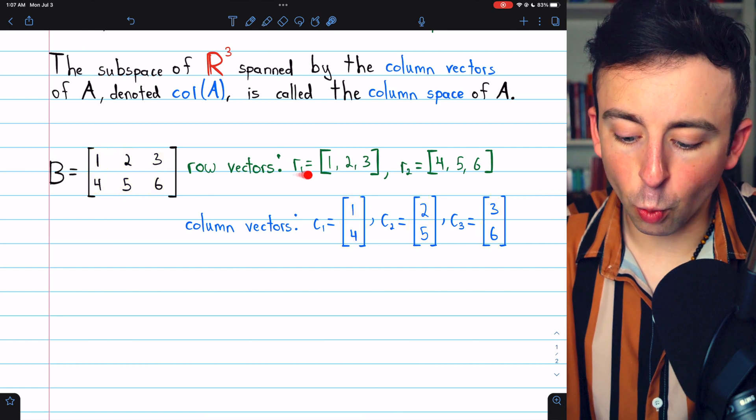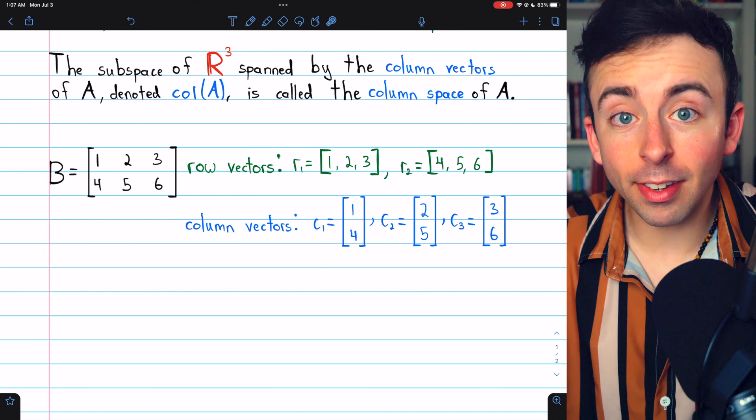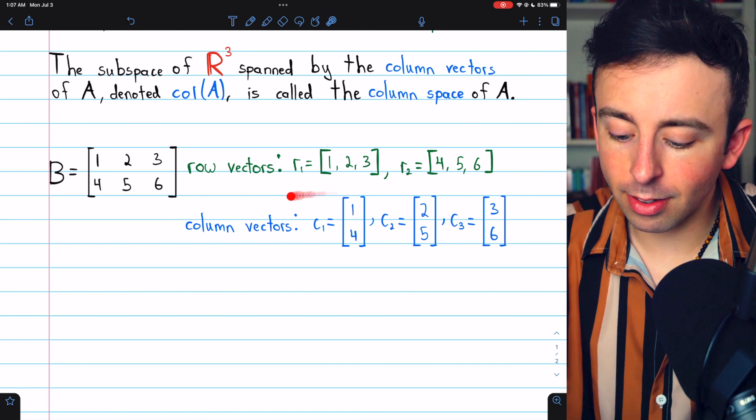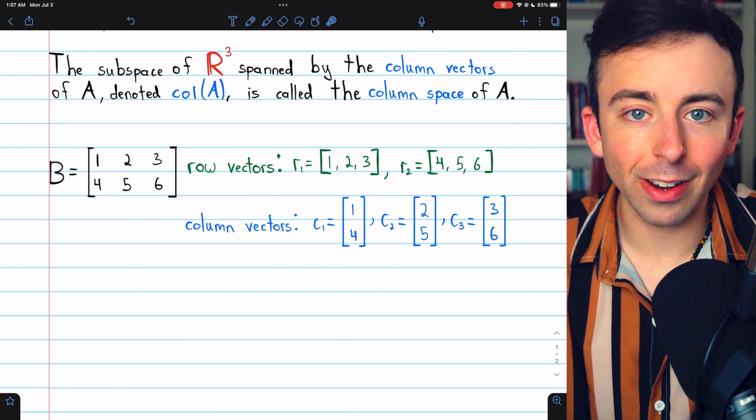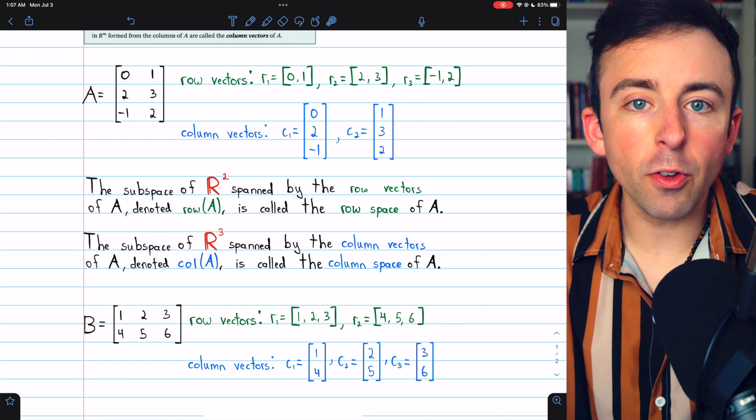In this case, since each row has three entries, the row space is a subspace of R3, and the column space is a subspace of R2, since each column has two entries. So that's what row vectors and column vectors are, and a bit about why they're important.